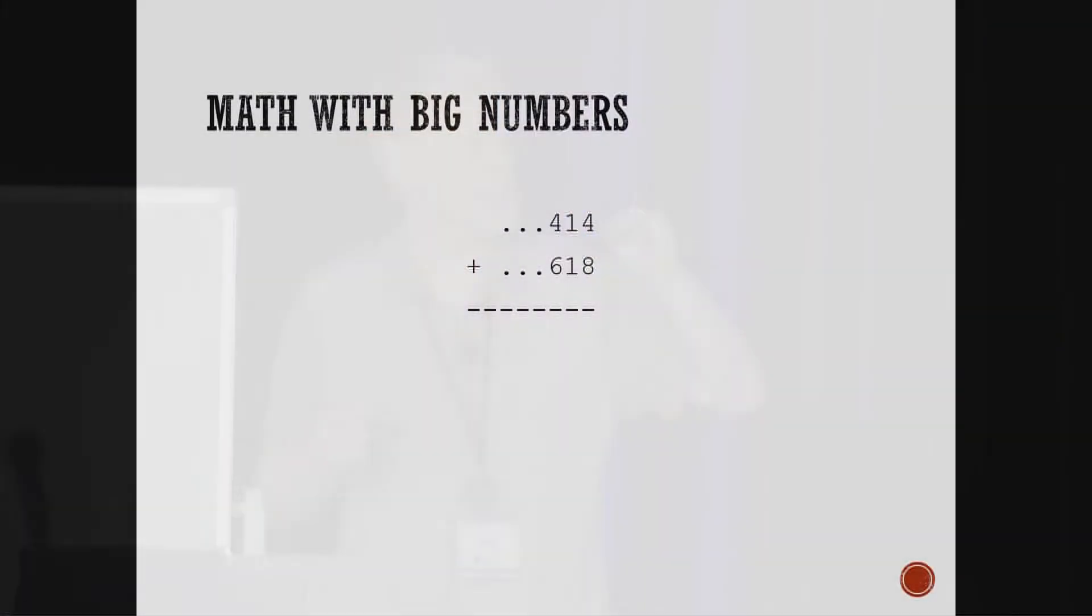So, let's say we have two big numbers. These dot, dot, dots there just represent digits either we don't know or we don't care about. We just know the last three digits. So, if you're going to add two numbers, and you just know the last three digits, how many digits of the answer do you know? Well, exactly three. No more, no less.